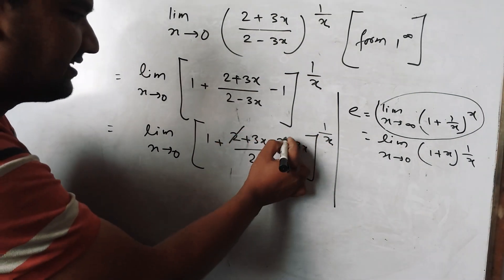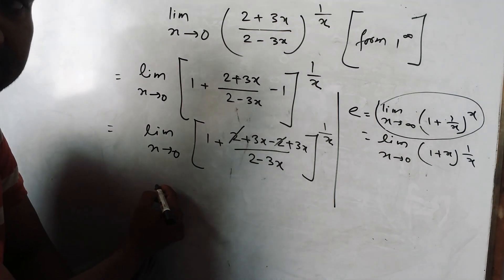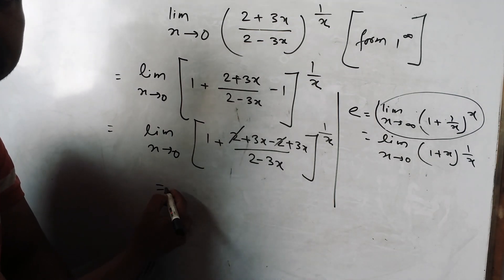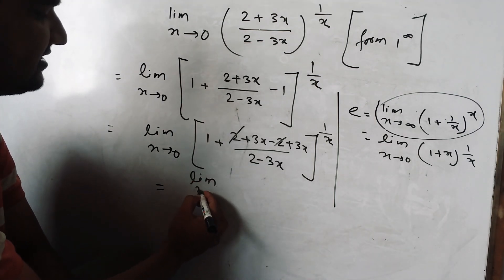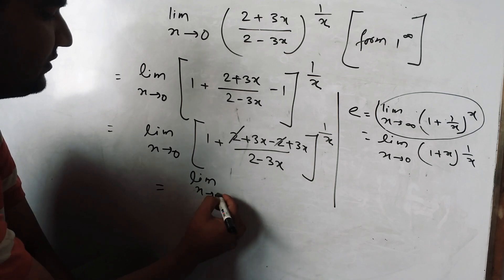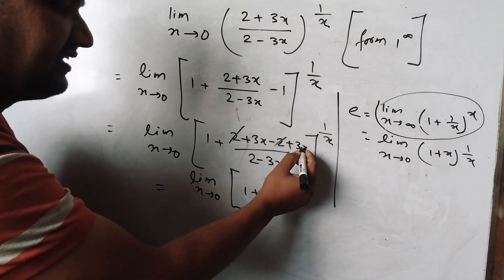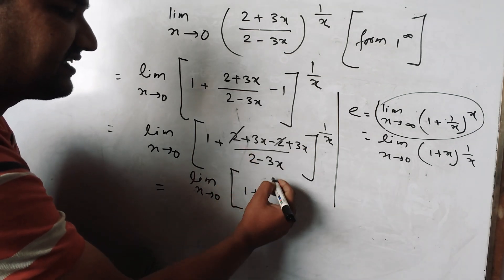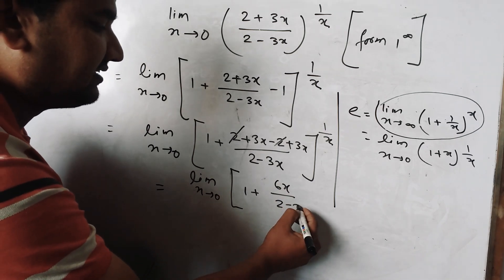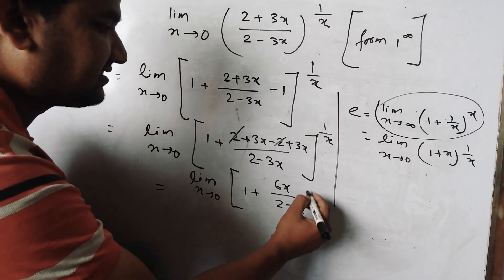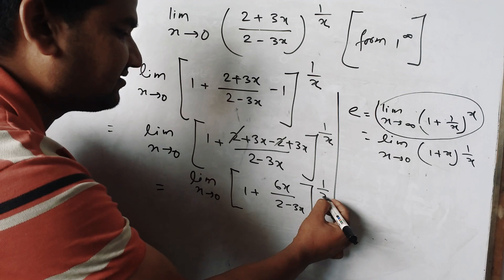We need to cancel the number 2. Let me cancel the number. Limit as x tends to 0 — let's change the number and solve this.